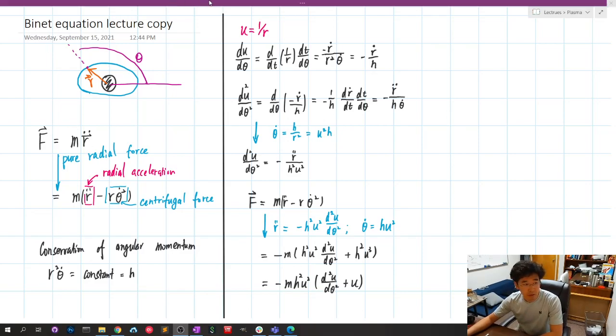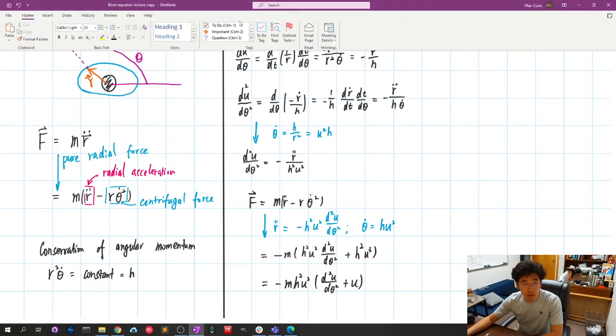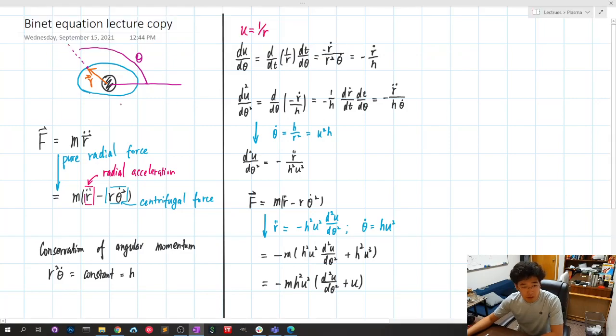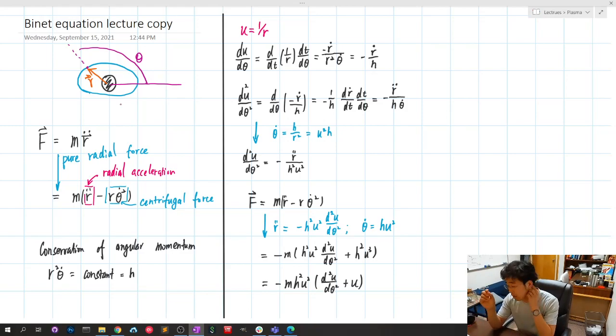I'll talk briefly about the Binet equation. It's relatively simple, pretty much an equation of motion based on force that is purely radial. You can think it could be gravitational or Coulomb force.